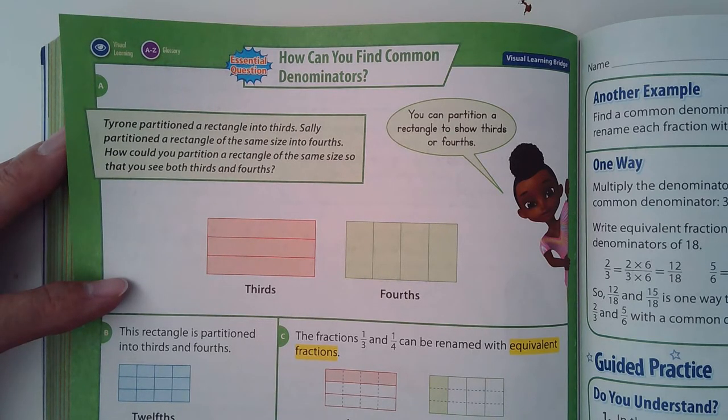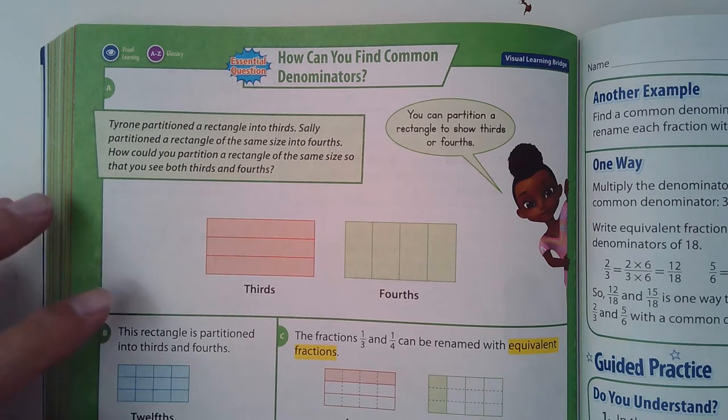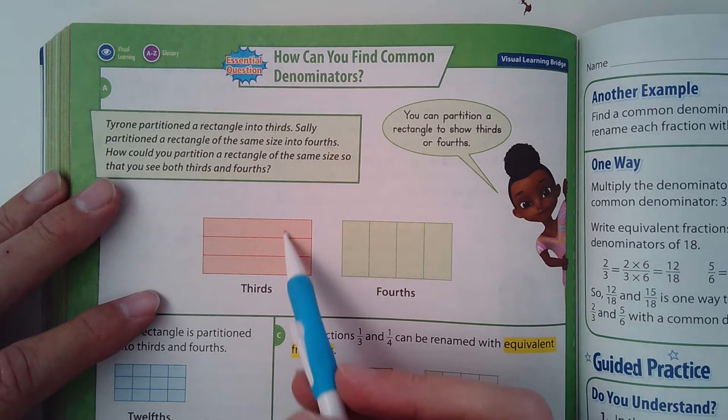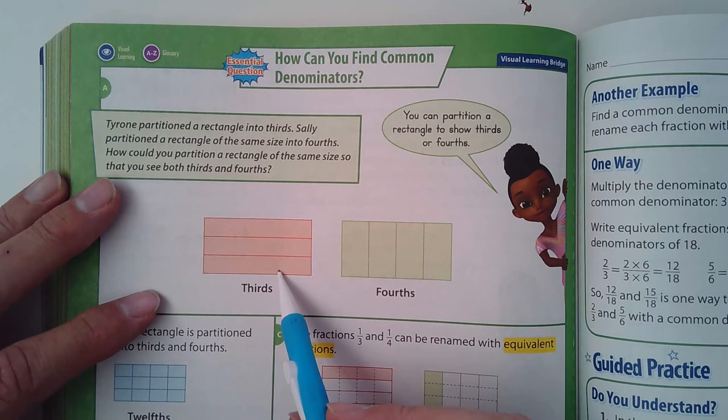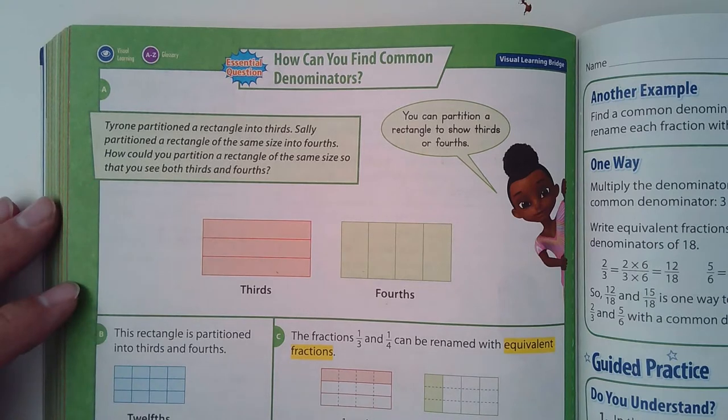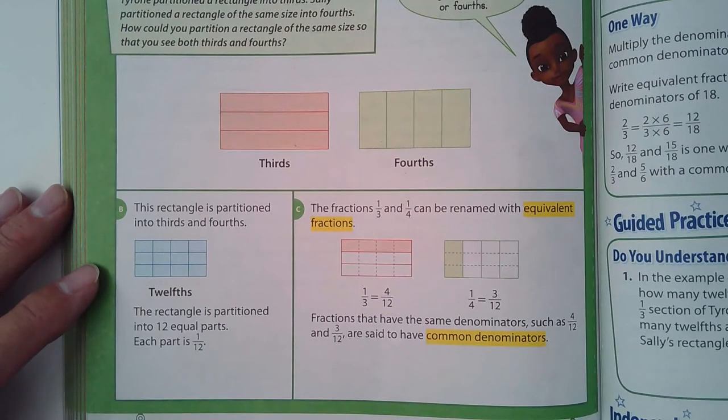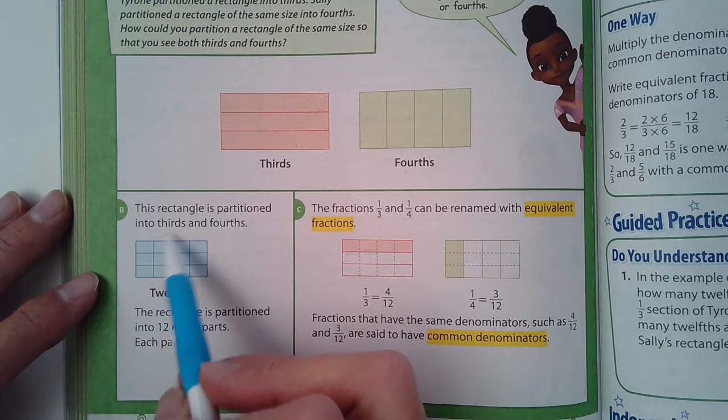They're giving you another way to look at finding a common denominator visually. So here's a rectangle divided into thirds and here's a rectangle divided up into fourths, and you can see that if they overlap the two you get twelfths.